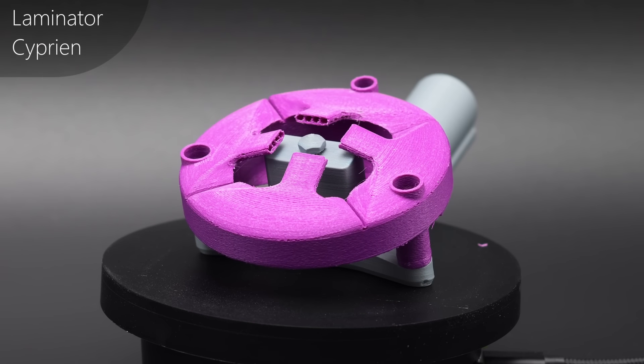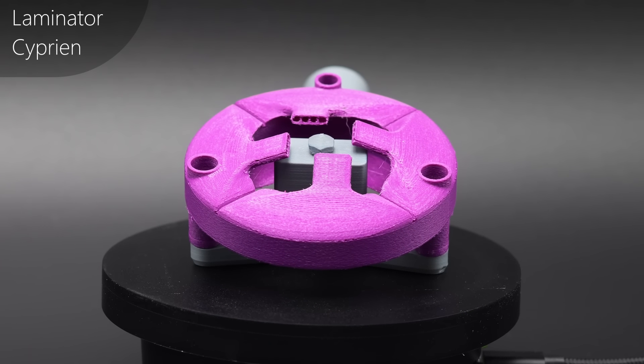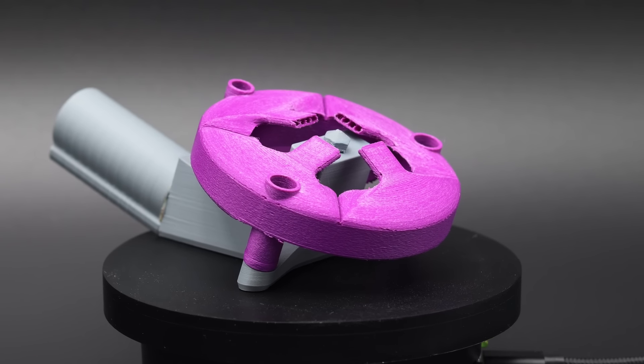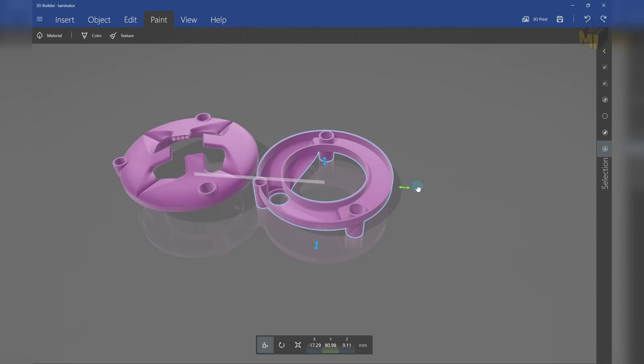Next up we have the Laminator by Cyprian. This one appeared in a previous video because I had some trouble printing it. We ended up resolving most of those problems by reprinting it with adaptive layer heights. This one's pretty strange.